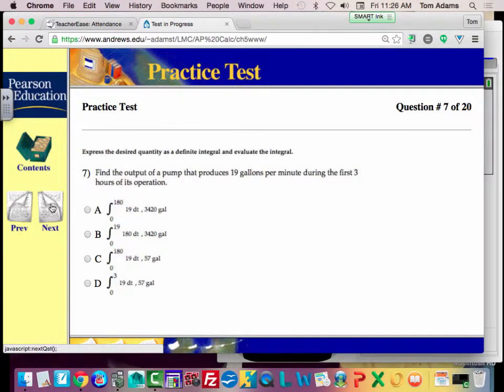Question number seven. 19 gallons per minute for three hours. Okay, so what they're saying is it's a constant rate of change. So if we think of the rate of change as f of x, it's just a constant 19.